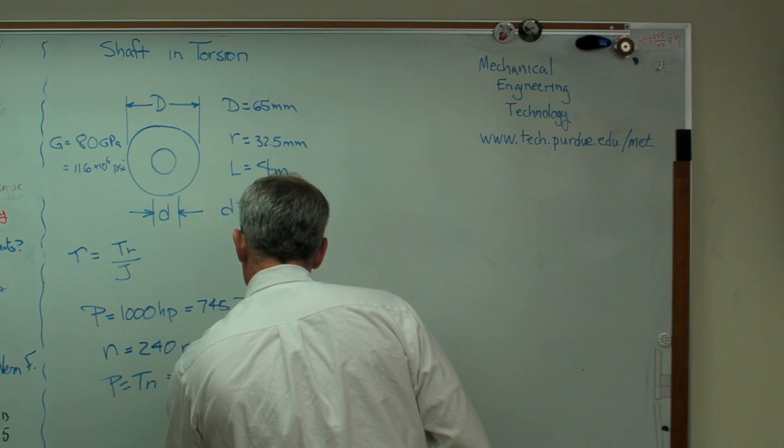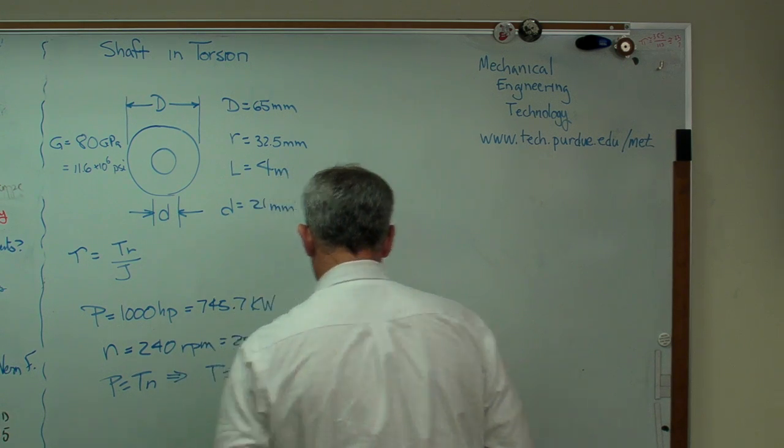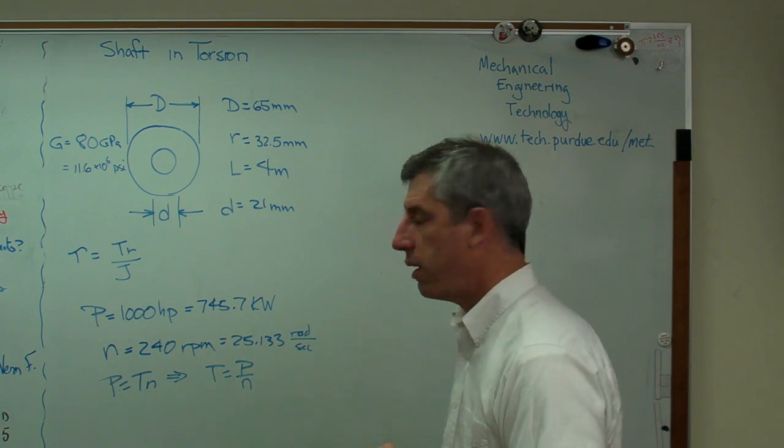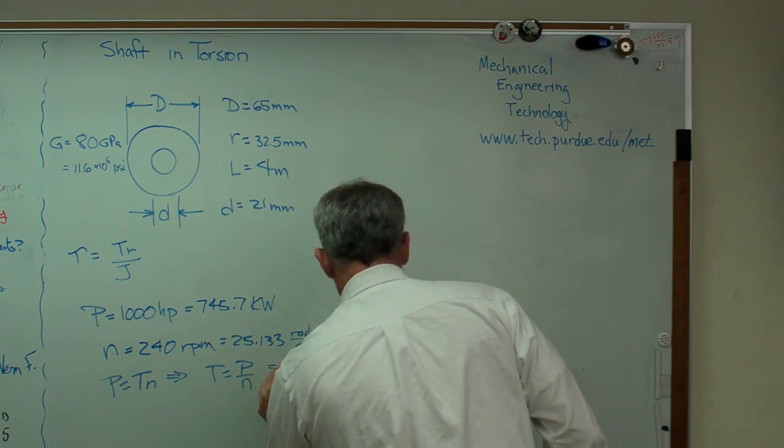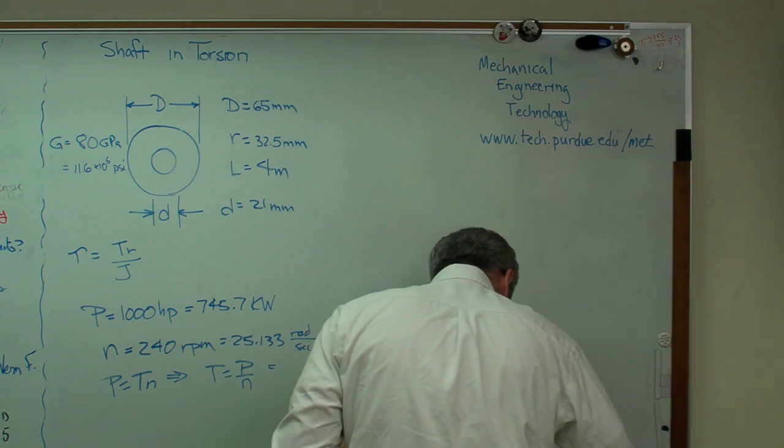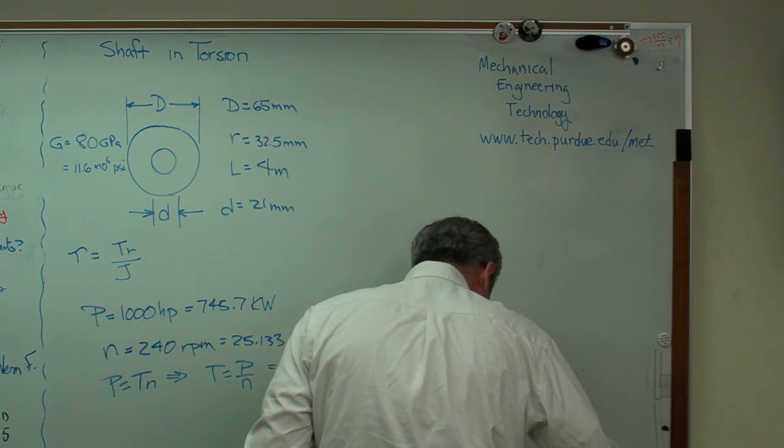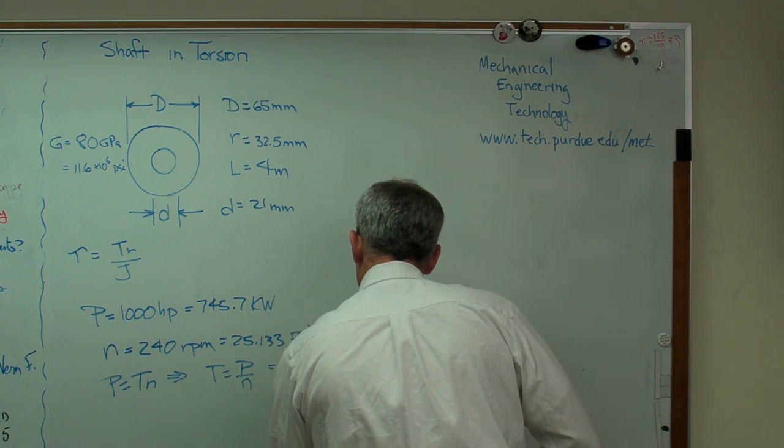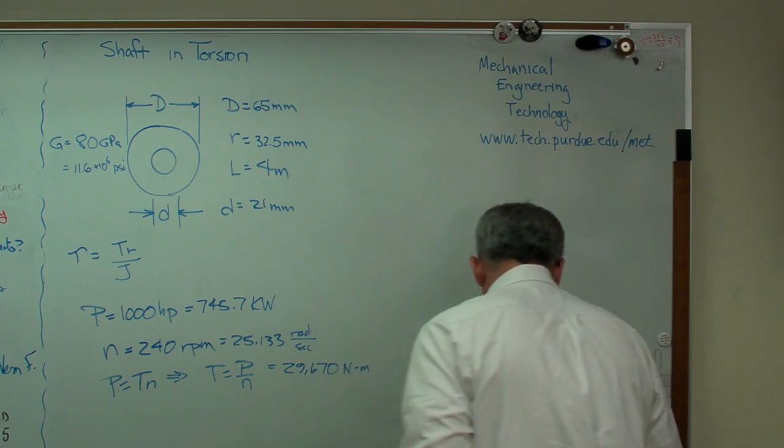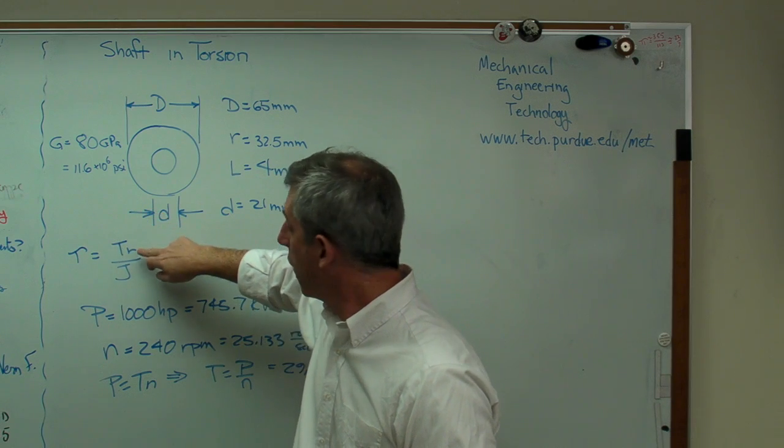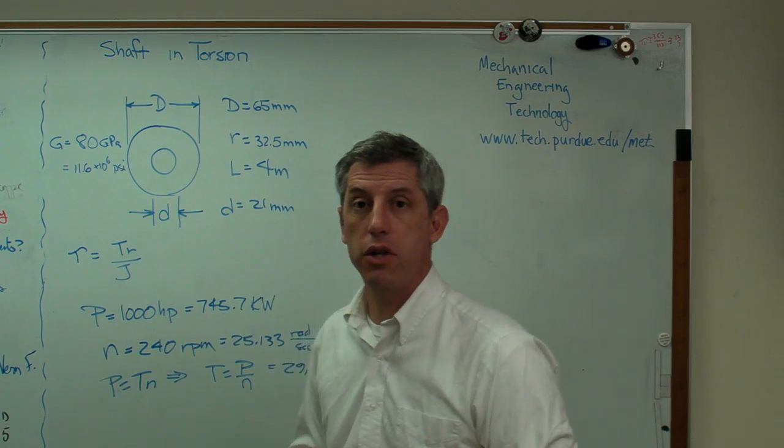So anyway, power equals torque times N. So I need torque. And that's going to be P over N. Make sure I got this in frame here. I just got it in frame. And that's going to work out to, I'm going to give you this in newton meters, 29,670 newton meters. So I've got everything I need here. I've got the torque. I've got the radians. And I've got J.